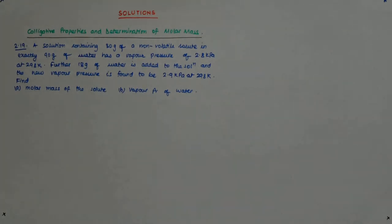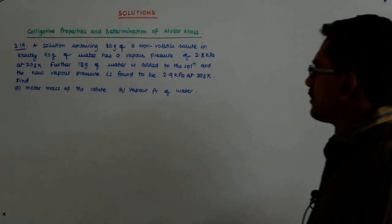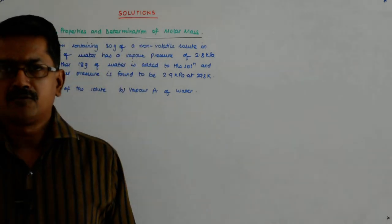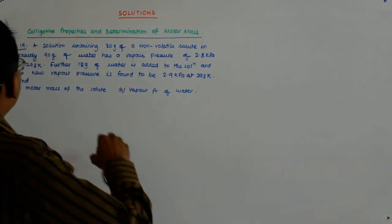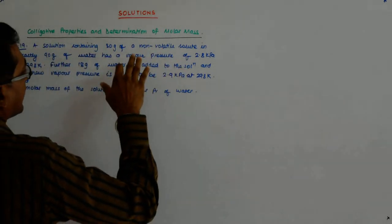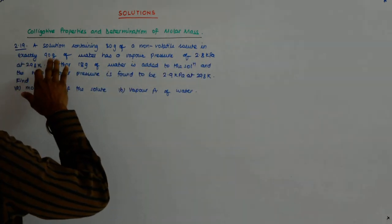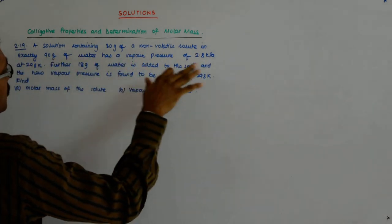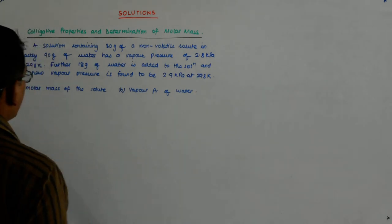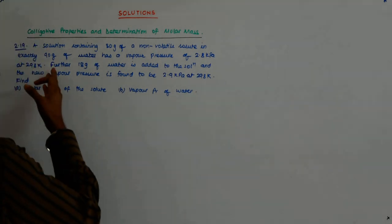So let us try to solve this question relating to the relative lowering of vapor pressure. It says that a solution containing 30 gram of a non-volatile solute in exactly 90 grams of water has a vapor pressure of 2.8 kilopascal at 298 K.